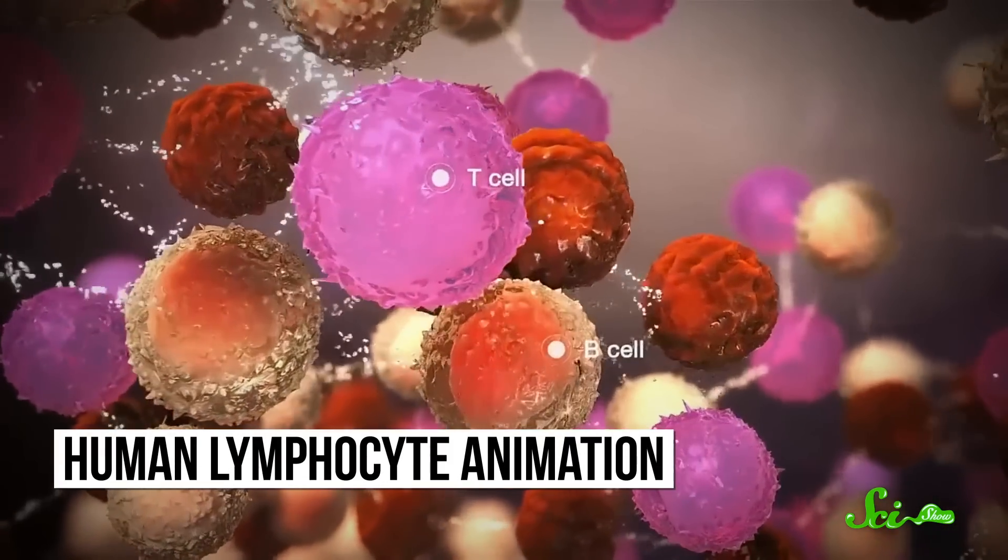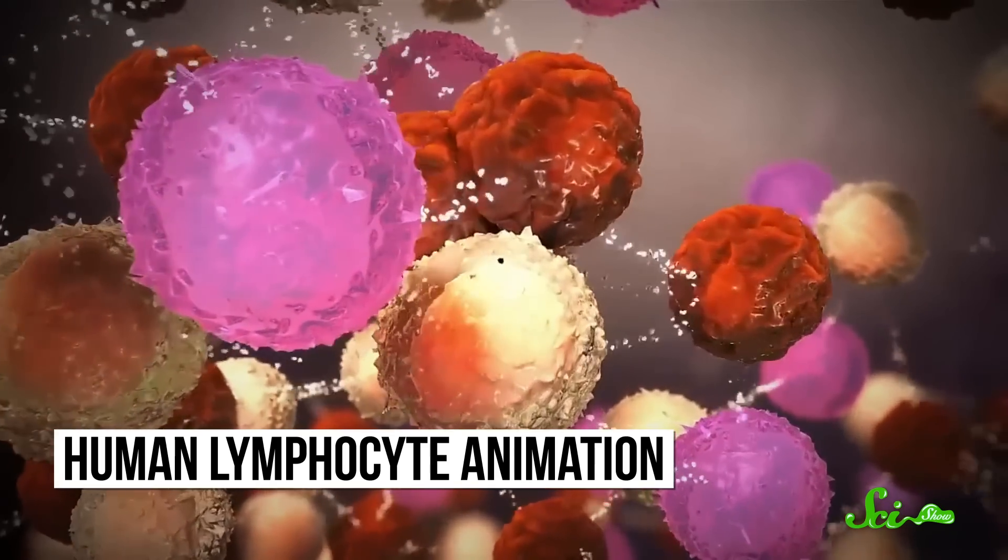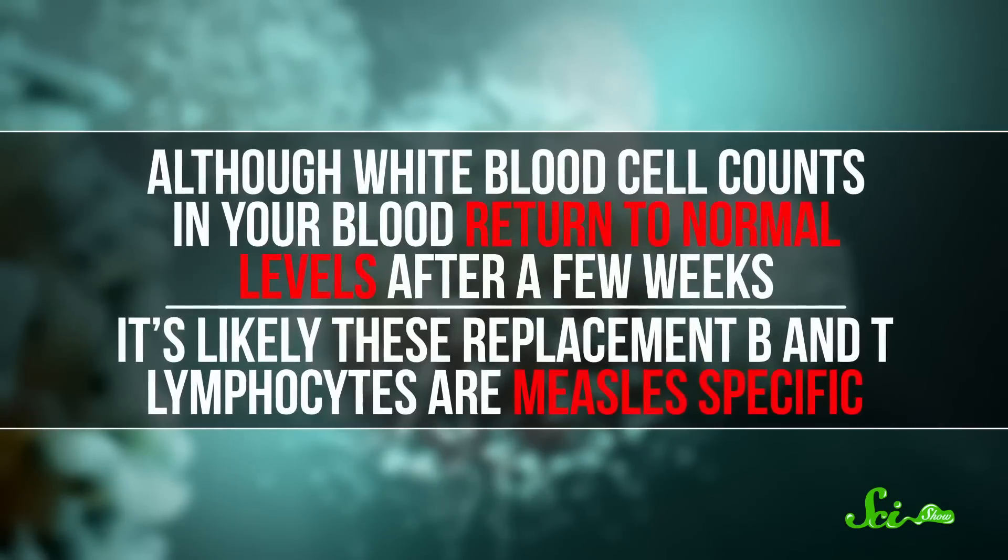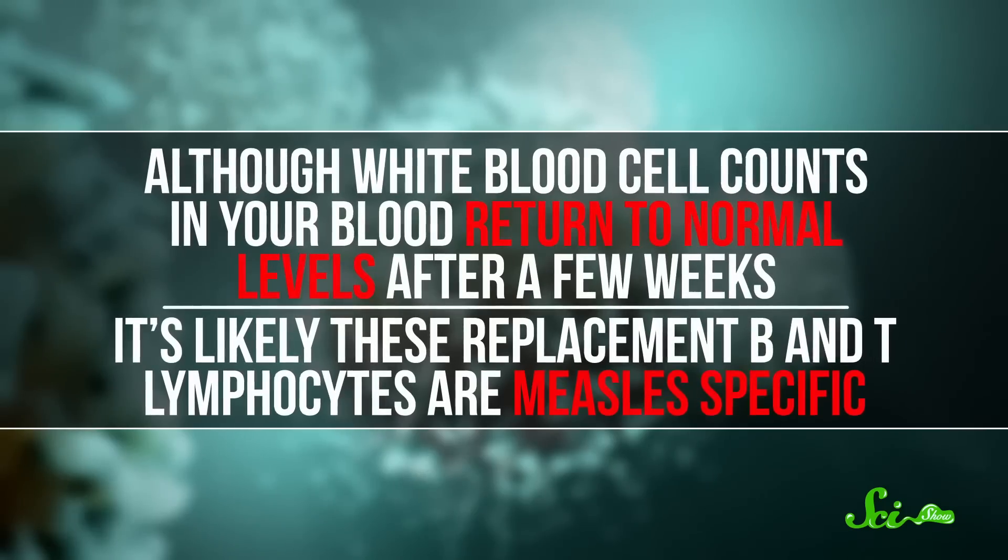We know from studies in both macaque monkeys and humans that the measles virus attacks and kills B and T lymphocytes, so it might literally wipe out part or all of your immune system's memory bank. And although white blood cell counts in your blood return to normal levels after a few weeks,